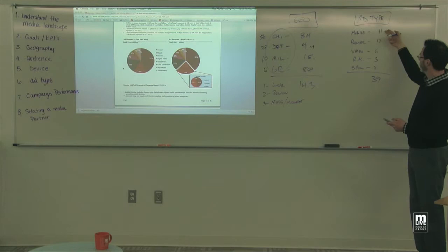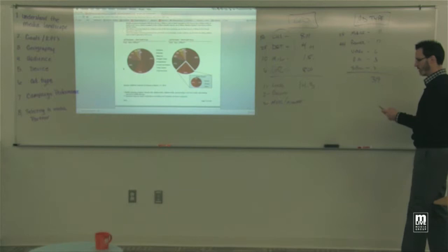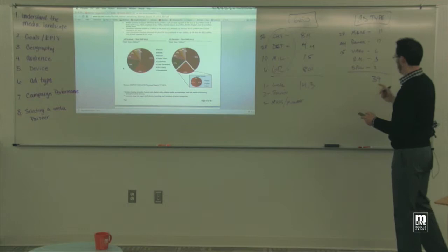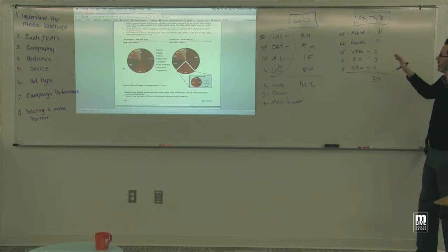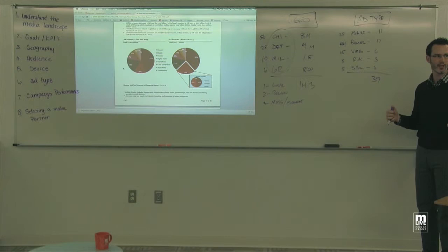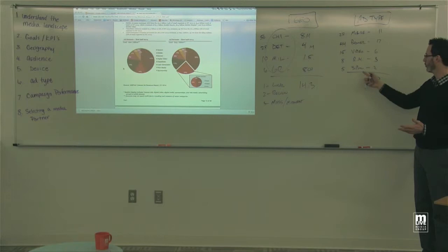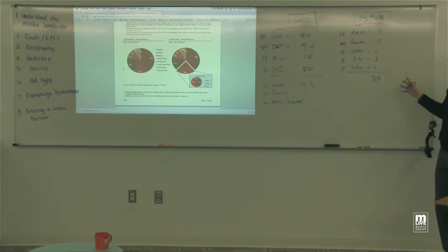Now if we decide these are the areas we want to invest in, we do the same math we did for geography for our ad types. 11% mobile divided by 39% equals 28% in mobile. 17% divided by 39% is about 44% in display. Video at about 15%. Rich media around 8%. This allocates ad types strategically and ensures you're adequately reaching the market while incorporating high-impact and engagement portions as well. Keep in mind not every budget allows all formats, so prioritize accordingly.